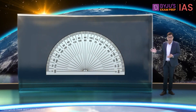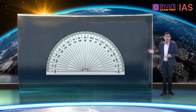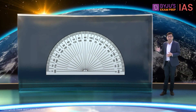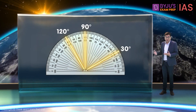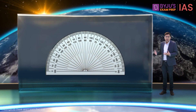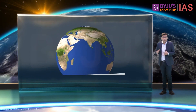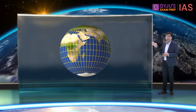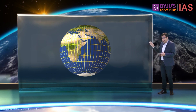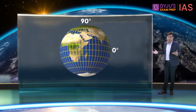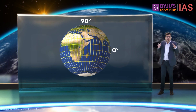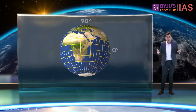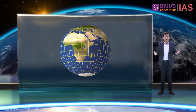This is a protractor. You may have used it in your math class to measure angles. You may have noticed that I have also been referring to these lines in terms of degrees. So why do we refer to these as degrees? Time to find out.